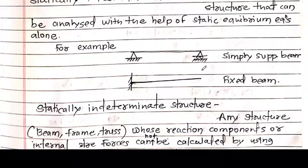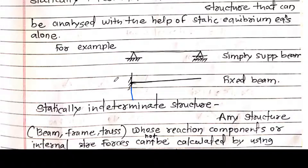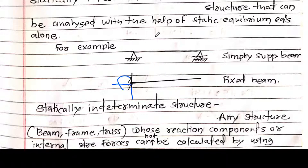This second beam is a cantilever beam — one end is fixed and the other end is free. Fixed beam means it is fixed at both ends, so this is a cantilever beam. How many unknown reactions? Again 3 reactions, because fixed support offers 3 reactions — one vertical, one horizontal, and one moment reaction. So again we can use 3 equations of equilibrium to solve it. Both these structures are determinate because with the help of only equilibrium equations we can analyze them.